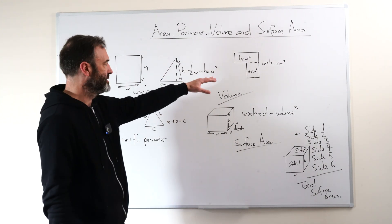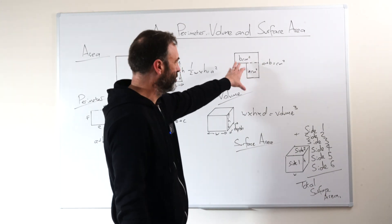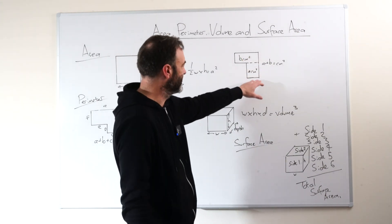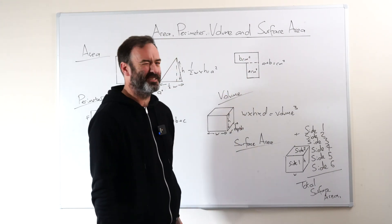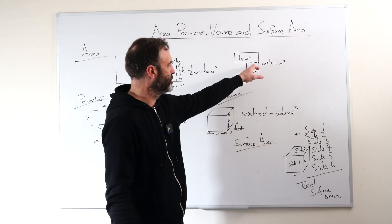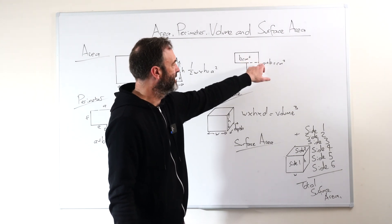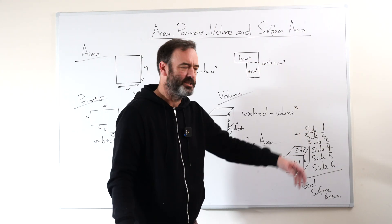Half the bottom times the height, same thing, area squared. Now, what you can get in the exam is what we call a composite shape, which is something like this. But all we do, and kids understand this pretty quickly, is we draw an imaginary cut line or chalk line. We work out this area and this area and we just add them together. Pretty straightforward.